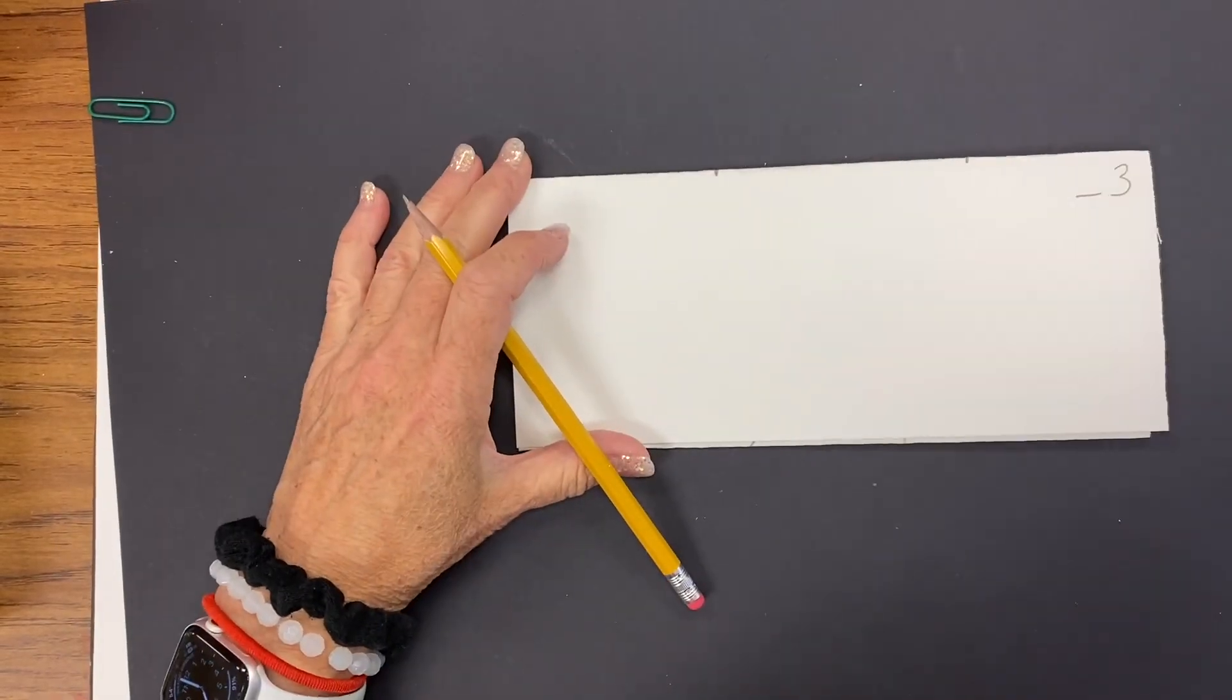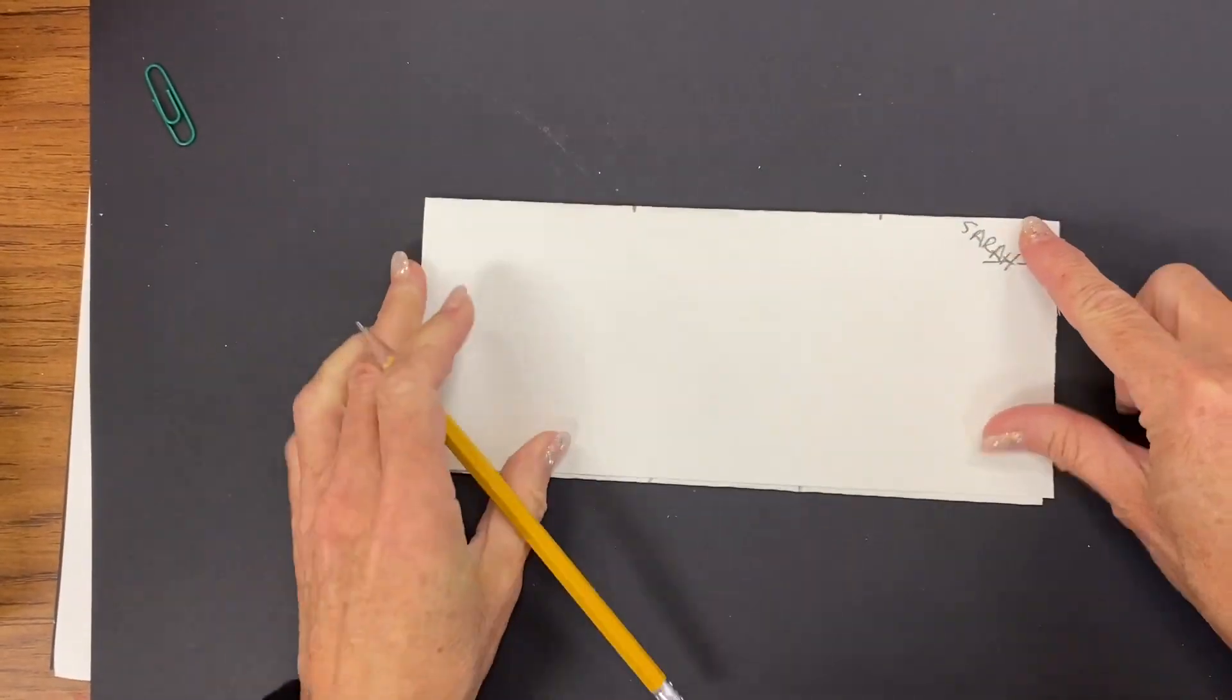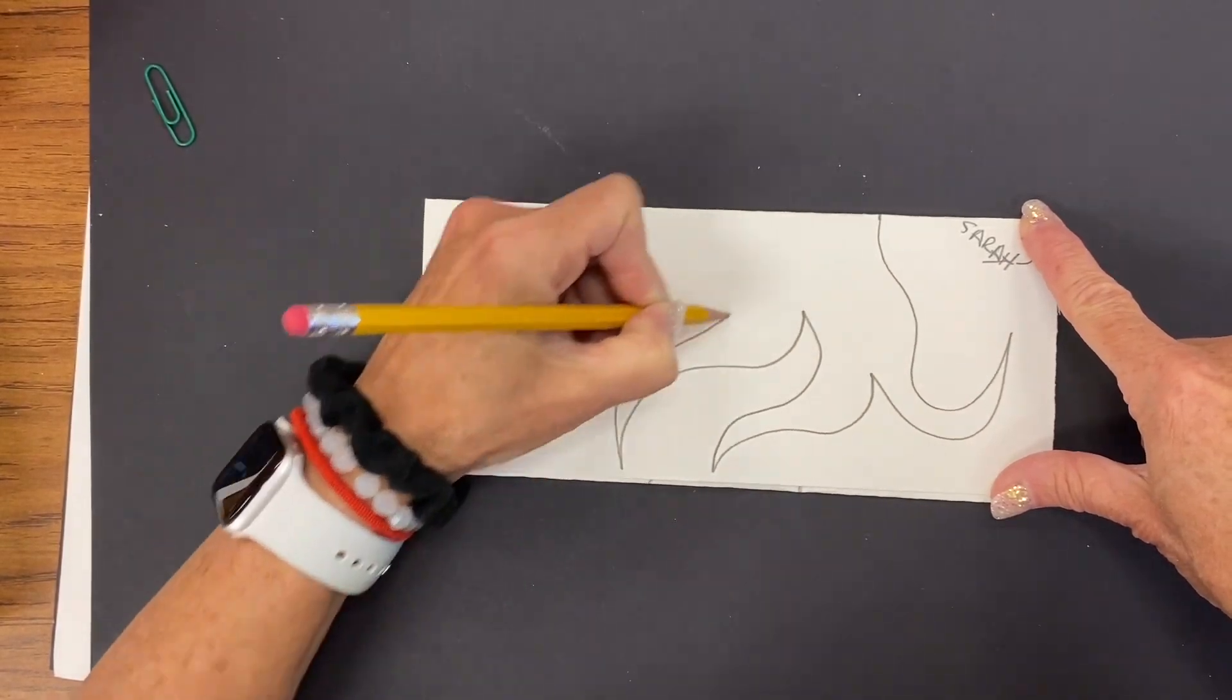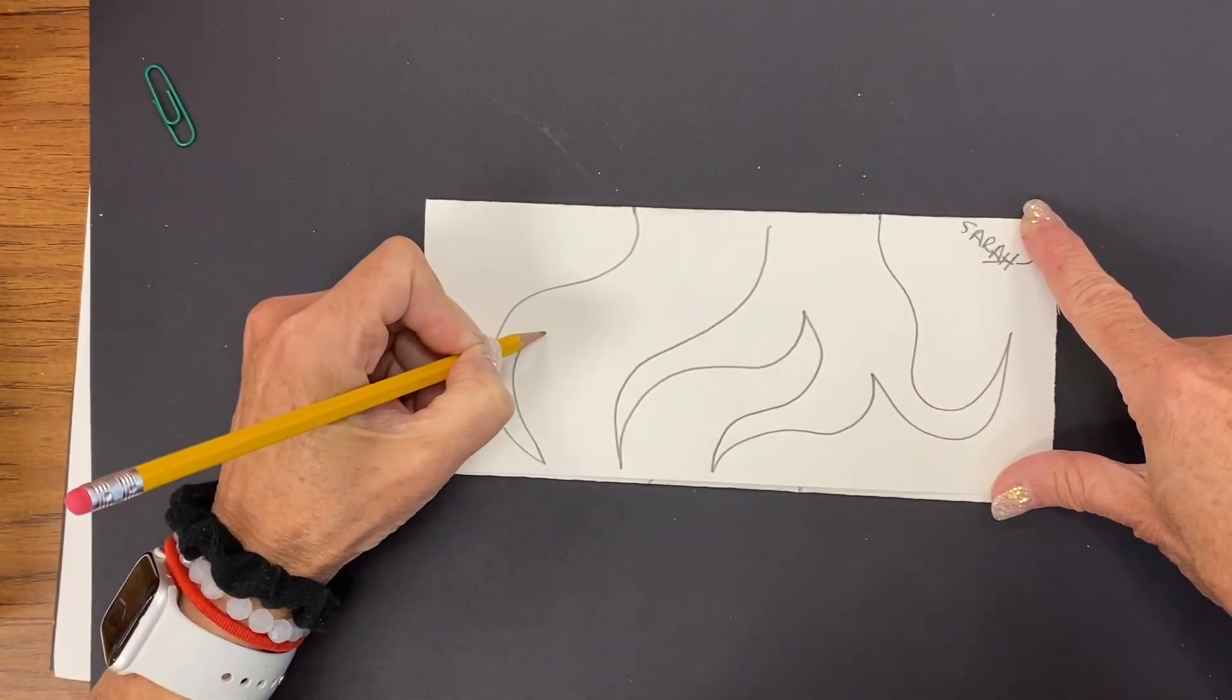Go ahead and fold the bottom one under and pass it to the next person so they can write their name and they can put the feet or the bottom of their kindness creature into the composition.